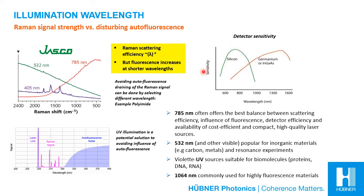However, there is usually much more autofluorescence from the sample at short wavelengths, which can easily drown the Raman signals. Then there is detector sensitivity: the sensitivity of commonly used silicon-based CCDs rolls off quite rapidly after 800 nanometers. At longer wavelengths it is possible to use InGaAs or germanium-based detectors, but those typically have higher noise, reducing the signal-to-noise ratio. An example of how wavelength selection impacts sensitivity is shown here with spectra of polyimide taken by a JASCO Raman instrument — the Raman signal is drained by fluorescence at 532 and 785 nm, but can clearly be resolved when illuminating with a 405 nm laser.